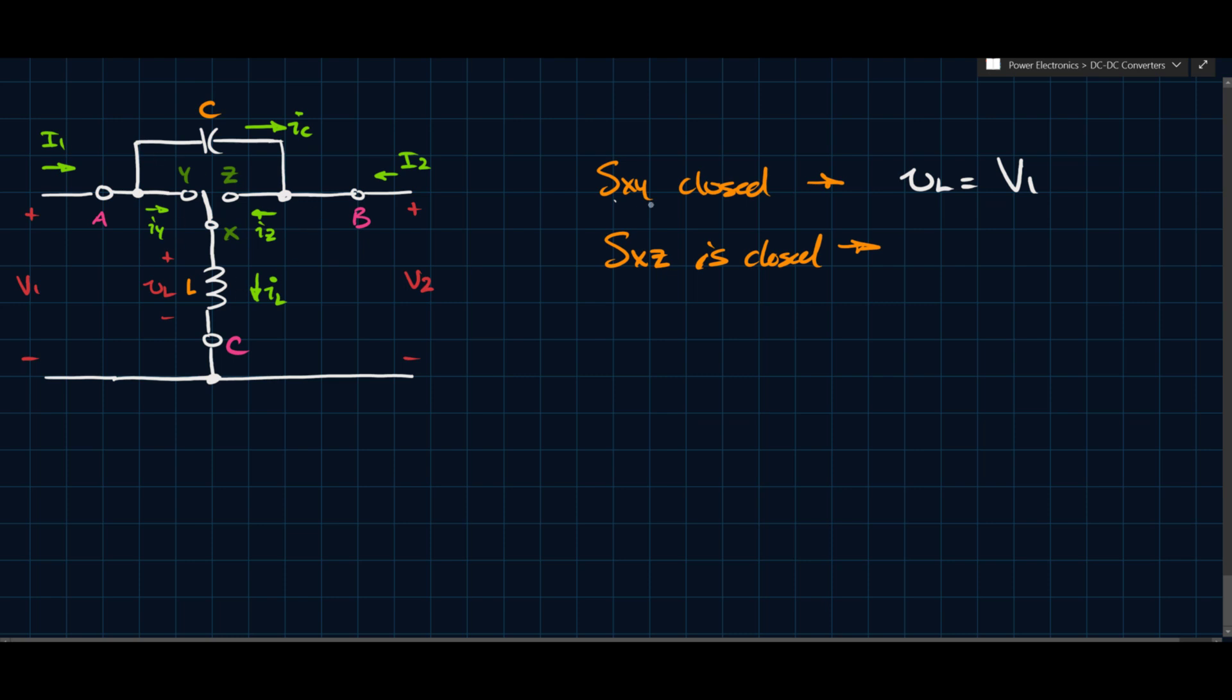Now on the other hand, we have that S X Z is closed for another duration. And if that's the case, then you'll have that this is connected here. And if X Z is connected, then VL equals V2.